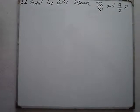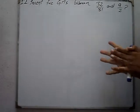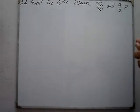Question No. 12. Insert 5 geometric means between 32 over 81 and 9 over 2. The two values are given, between which we will insert 5 geometric means.